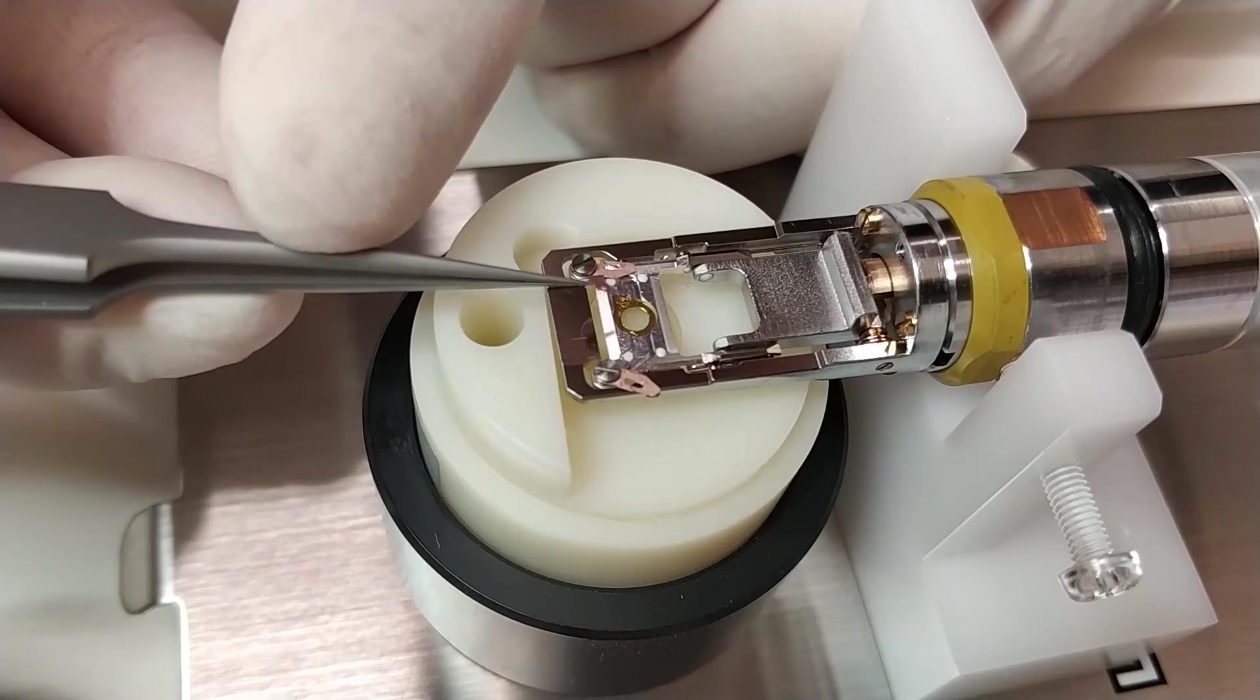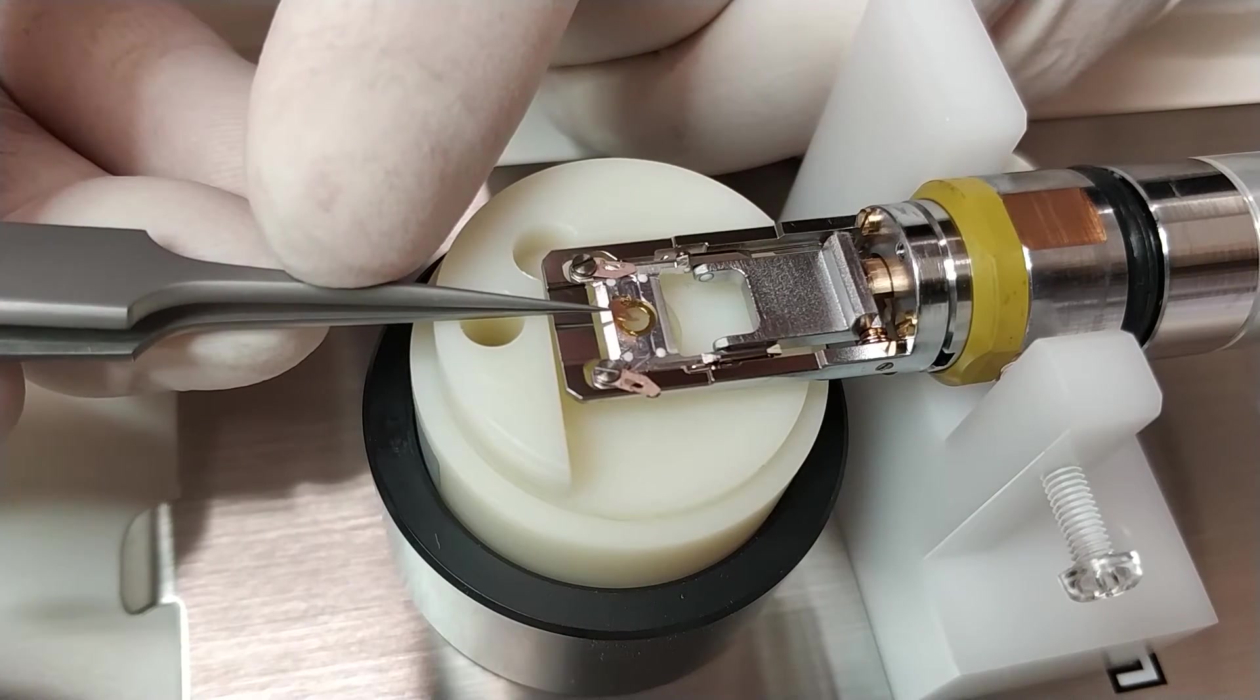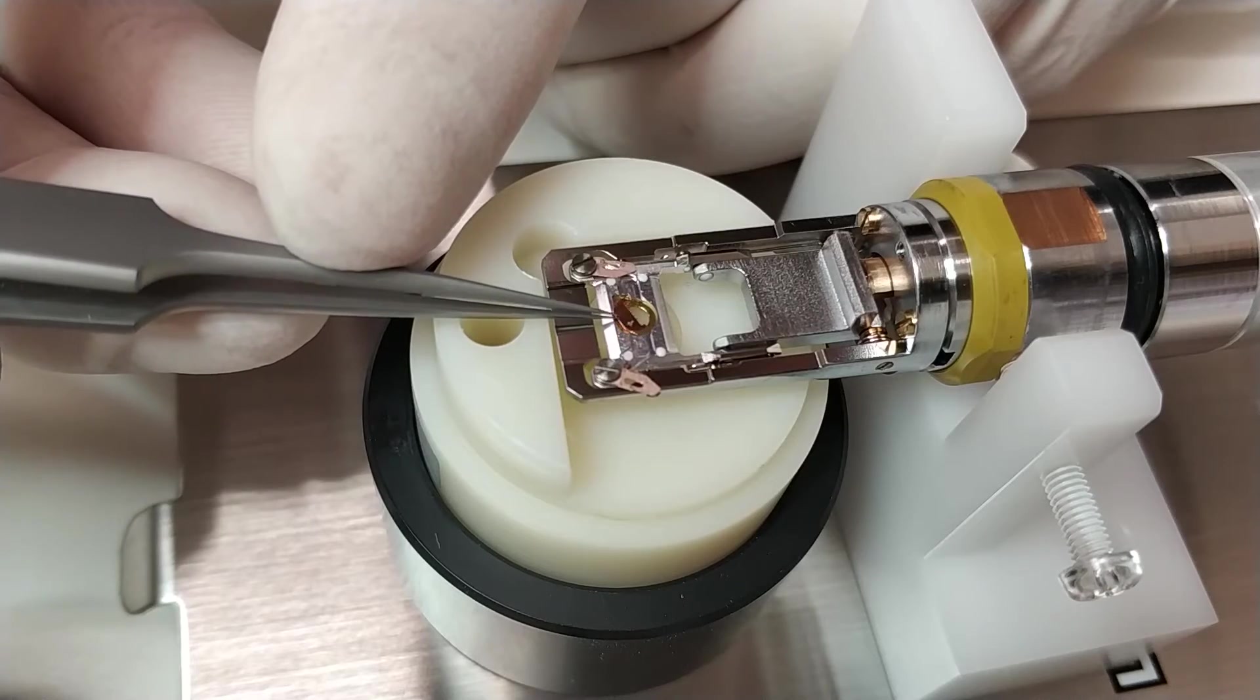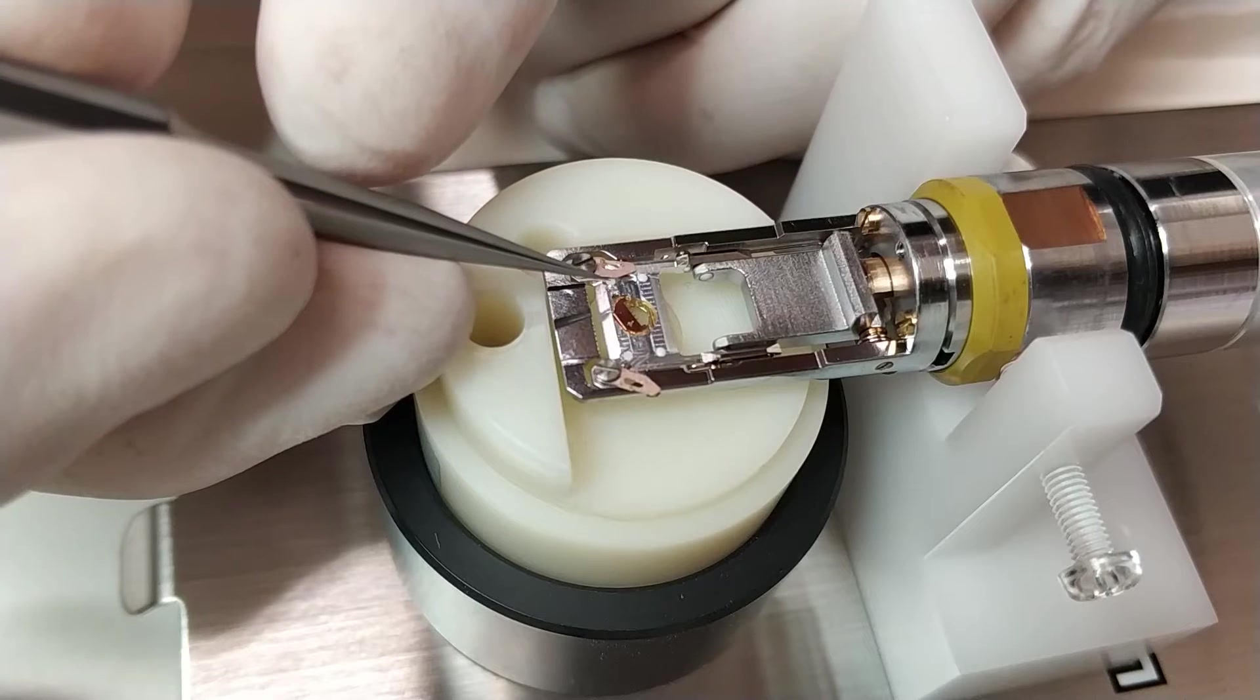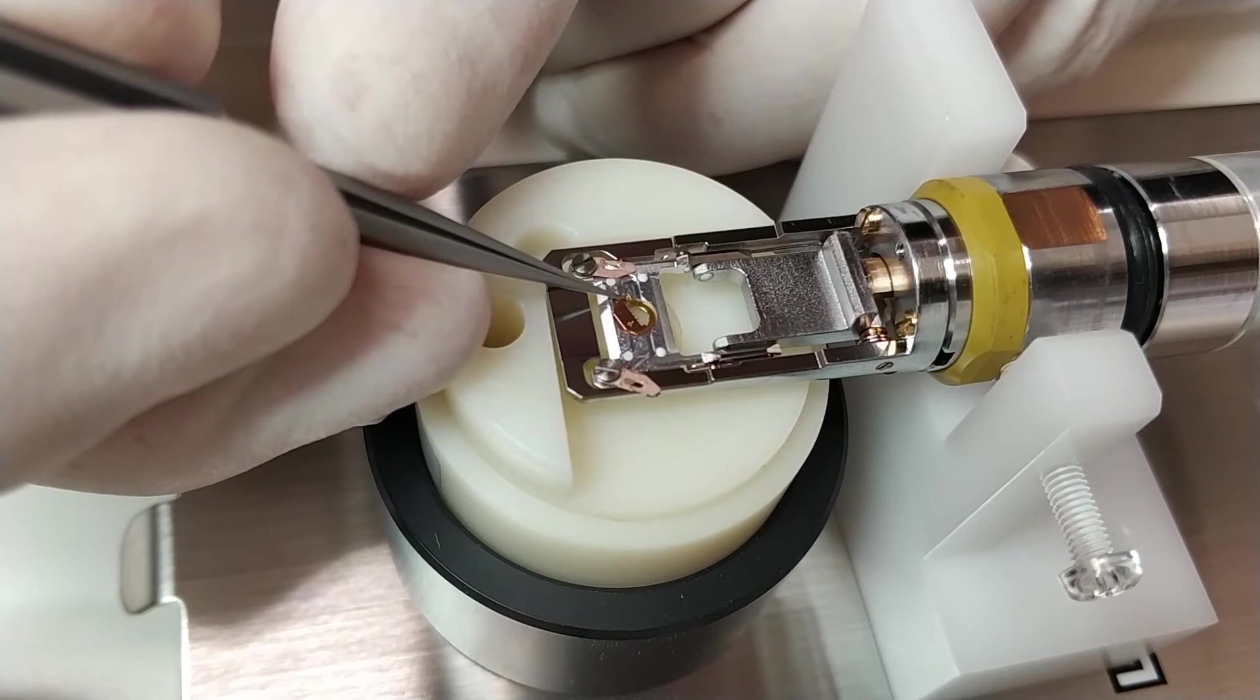Grab your sample with your tweezers. Today I'm loading a half-circle FIB grid. Place it in the exposed recess. Use the tweezers to nudge it into place.